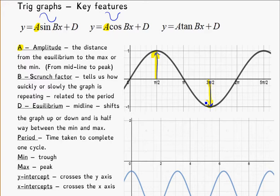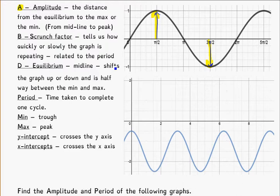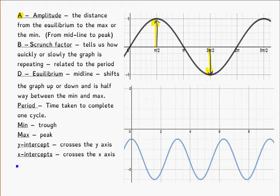And a good way to find that, if you're uncertain, if you're not sure where the midline would be, is that you can do max minus min divided by 2, and that will get your amplitude.